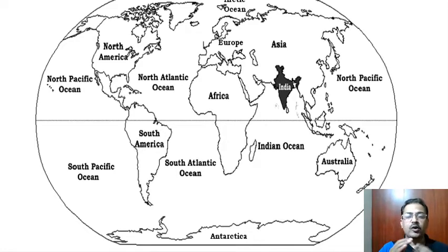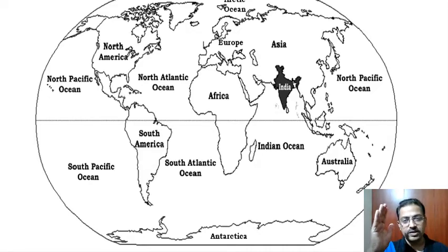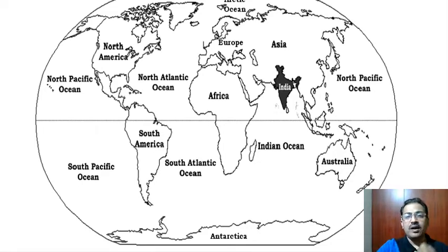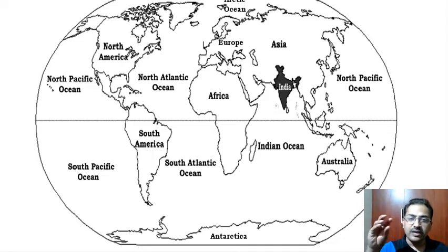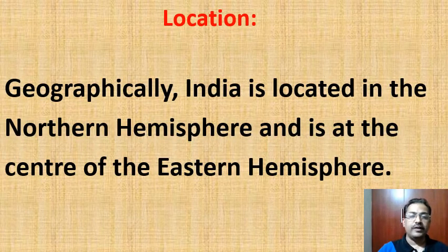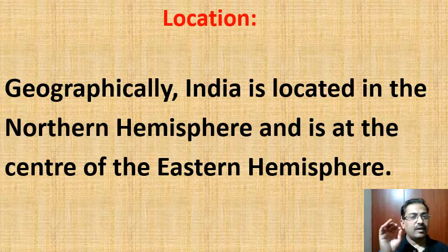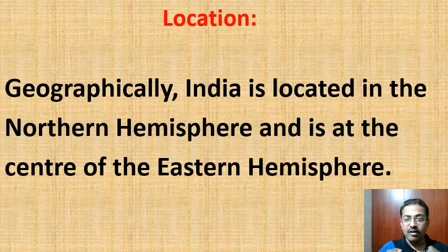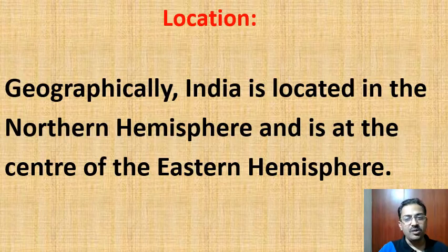If you divide the globe into eight different areas — north, northeast, east, southeast, south, southwest, west, and northwest — out of these eight directions, India is in the northeastern hemisphere. So don't forget: India is situated in the northeastern hemisphere. Geographically, India is in the northern hemisphere and at the center of the eastern hemisphere, that is the northeastern hemisphere.